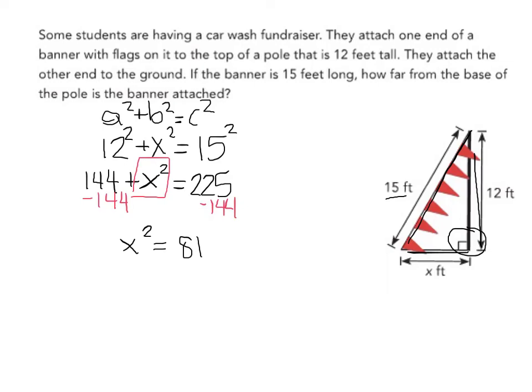Now, it's really important to know that you're not done yet, because you still have this square here. So the opposite of squaring something is taking the square root, so I have to take the square root of both sides.